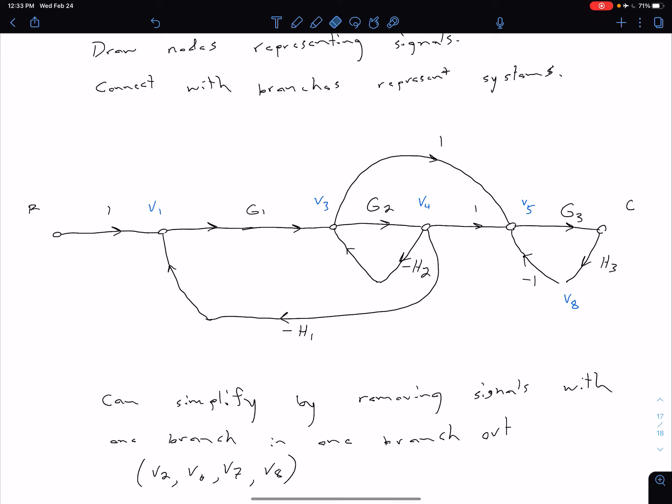And then finally, we can get rid of our V8 and we can connect C directly to V5 and change that H3 to negative H3.